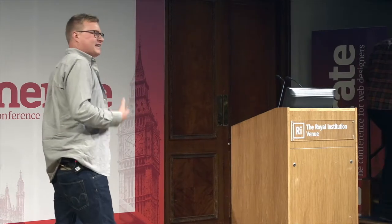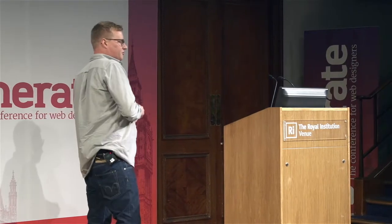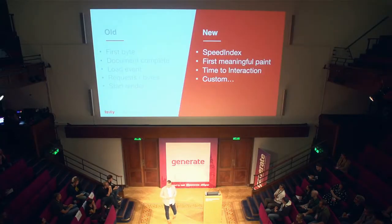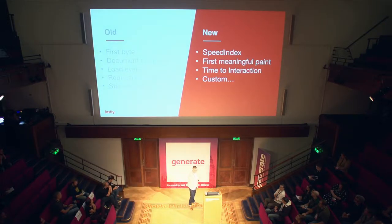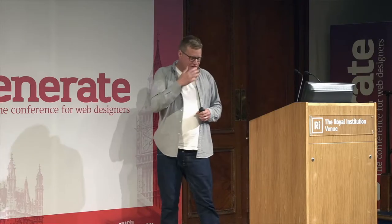Should we be focusing on a single golden performance metric — that load event, the one thing that we need to optimize for? Should that even exist? Is there a single golden performance metric? For years we've been focusing on metrics like time to first byte, document complete, load events, how many requests you sent down the wire, how many bytes. But a lot of these don't correlate to the user experience at all.